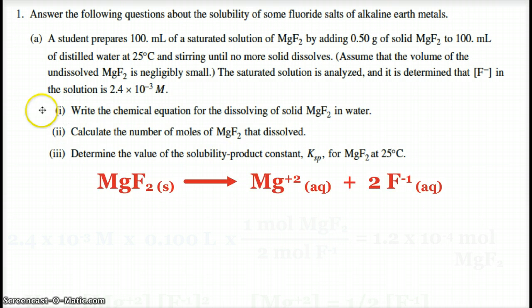Alright, so we get the solid breaking apart into the magnesium ion and 2 fluoride ions. Alright, so the state symbols, solid aqueous, not 100% crucial, but you've got to show magnesium plus 2 and 2 fluoride ions.